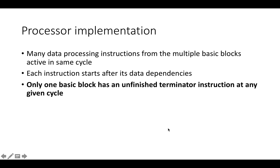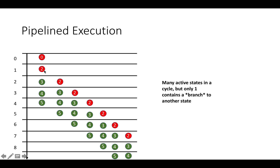Instead of starting the second loop iteration much later, we're starting it much sooner. Pipelining is an incredibly powerful optimization. We now have many data processing instructions from multiple basic blocks active in the same cycle. Each instruction still starts after its data dependencies, and only one basic block has an unfinished terminator instruction at any given cycle. Many data processing instructions are executing out of order relative to the sequential program, but all branch instructions execute in the same relative order as they would in a single-threaded program. This means a pipelined processor is not a distributed system — it doesn't have multiple simultaneous flows of control, so it can't starve or deadlock.